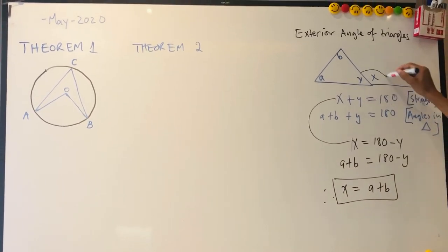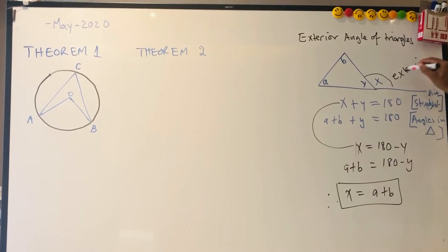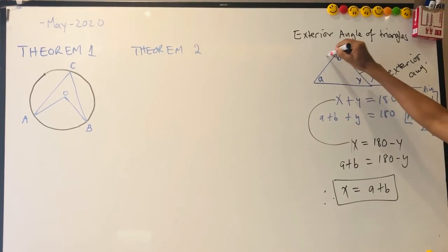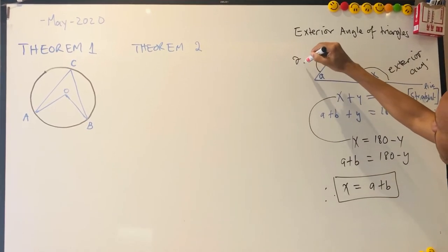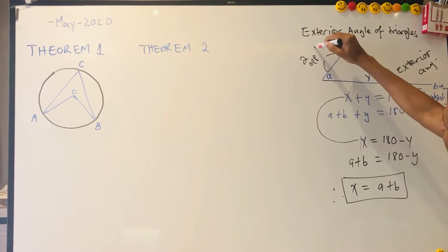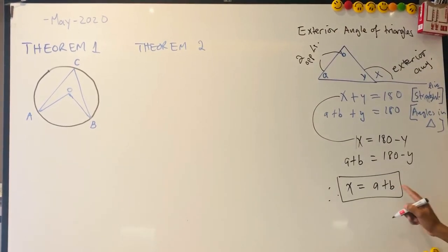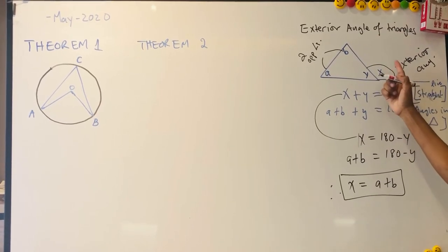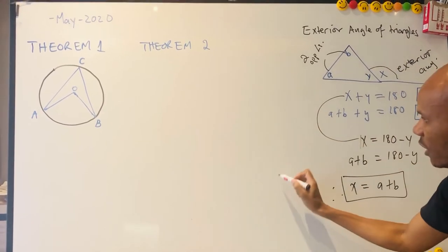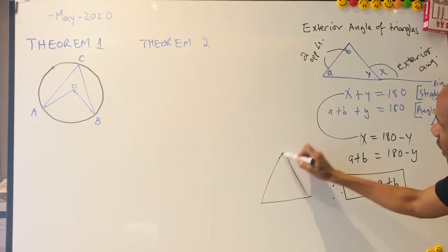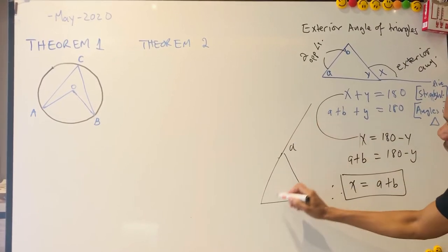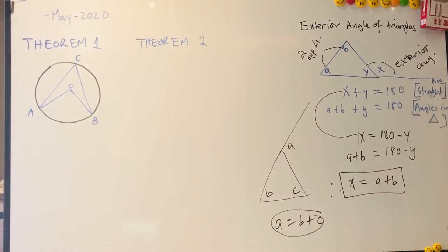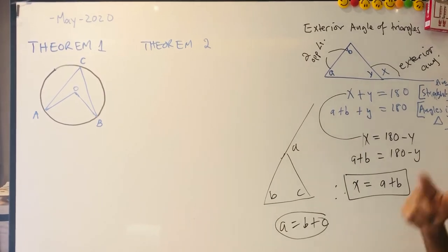So you would know that x is the exterior angle, and a and b are the two opposite interior angles. Hence this theorem: the exterior angle of a triangle is equal to the sum of the two opposite interior angles. So even with that triangle extended, if you have angles a, b, and c, then a is equal to b plus c.